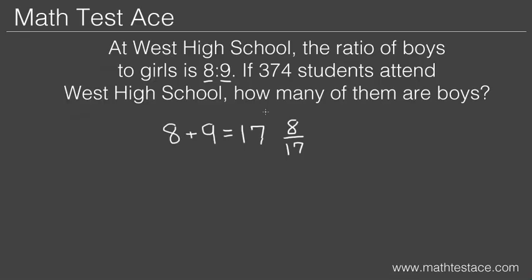So now we can find out what the question is asking us, which is the number of boys in the school. 8 seventeenths of the 374 students are boys, which is another way of saying that the number of boys is 8 seventeenths times 374.